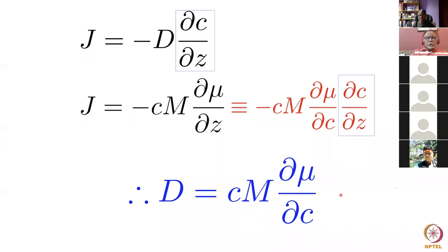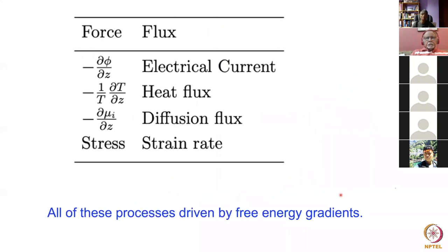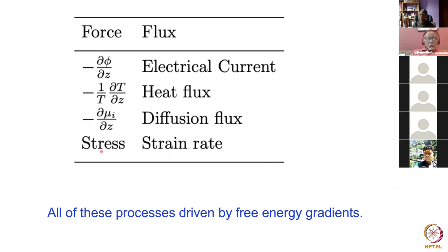To summarize: diffusion is driven by a chemical potential gradient, not in general by a concentration gradient. For electrical current the force is voltage, an expression of electromotive force. For heat flux the force is minus 1/T times the temperature gradient. For diffusion flux the force is the gradient of free energy. For plastic deformation, the product of stress and strain rate is the free energy dissipation rate, so strain rate will be proportional to stress for a perfectly plastic solid.